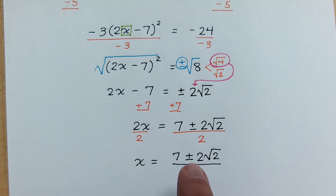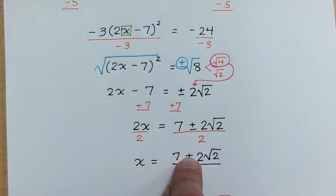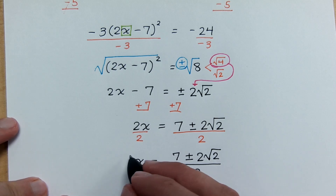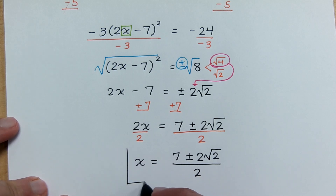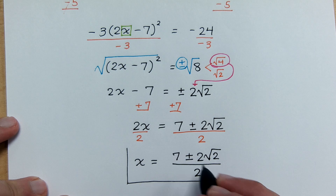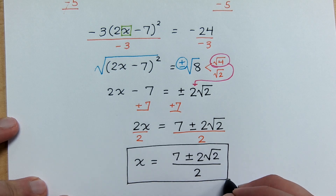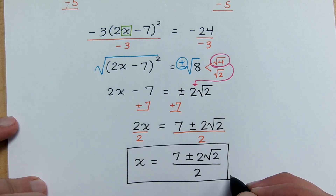If I just had the plus, could I simplify and put the 7 and 2 square roots of 2 together? No, I couldn't do anything else with this. There is no common factor for all of these guys, so this is as good as it gets. Do you guys have any questions about this? No? All right.